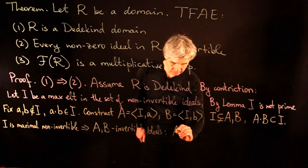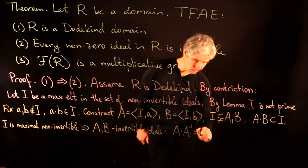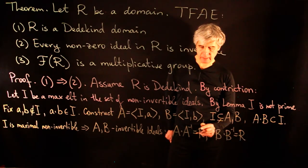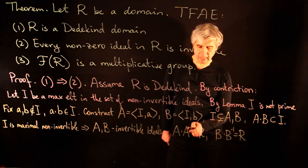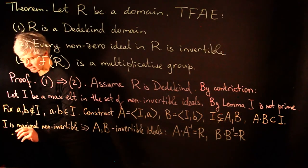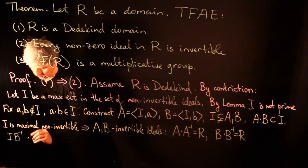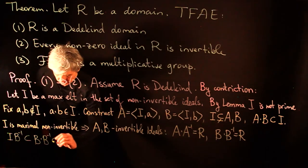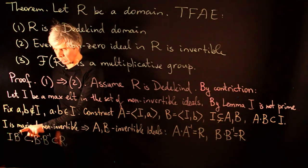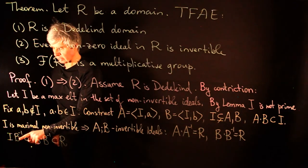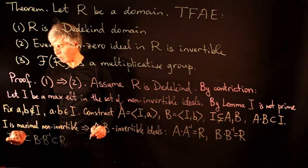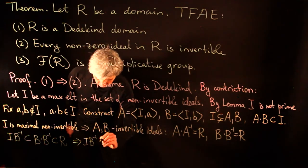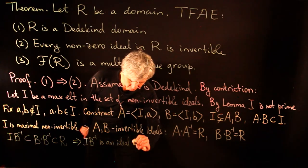So A·A⁻¹ = R and B·B⁻¹ = R. Consider the product I·B⁻¹. Since I ⊆ B, this is inside B·B⁻¹ = R. So I·B⁻¹ ⊆ R and it is clearly an ideal — elements multiplied by R get absorbed inside I. So I·B⁻¹ is an ideal in R.